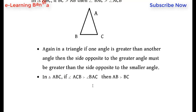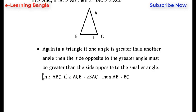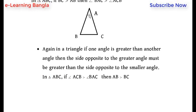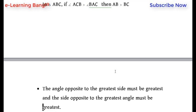If angle ACB is greater than angle BAC, then AB is greater than BC. The angle opposite to the greatest side must be the greatest angle, and the side opposite to the greatest angle must be the greatest side.